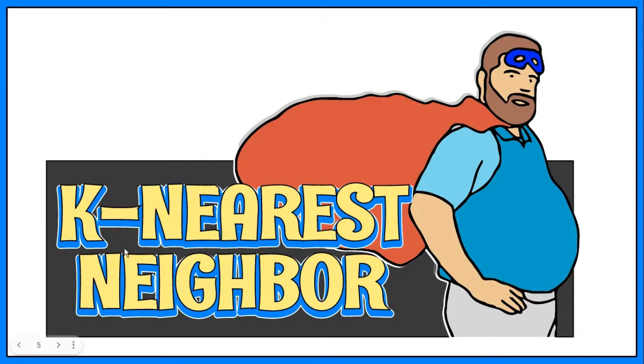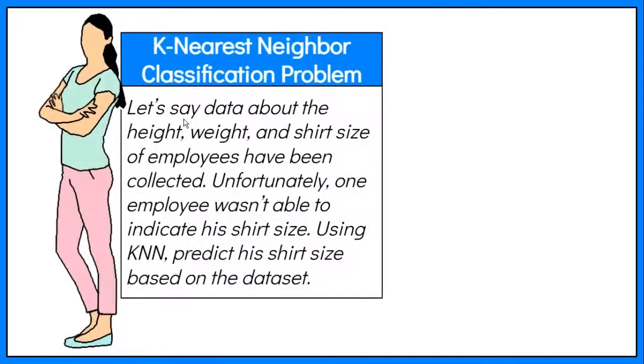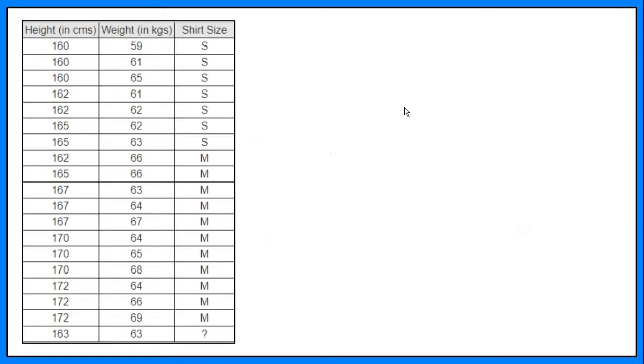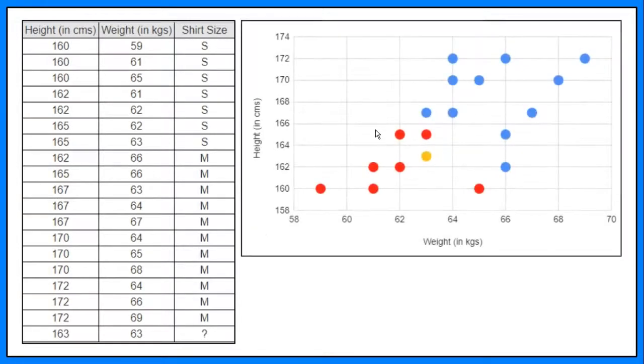To explain how KNN works, here's a simple example. Let's say data about the height, weight, and shirt size of employees have been collected. Unfortunately, one employee wasn't able to indicate his shirt size. Using KNN, let's predict the size based on the data set. Let's put the features as data points in a graph.